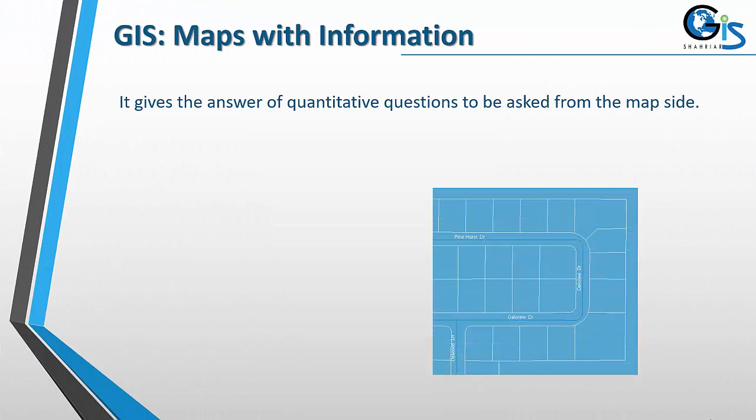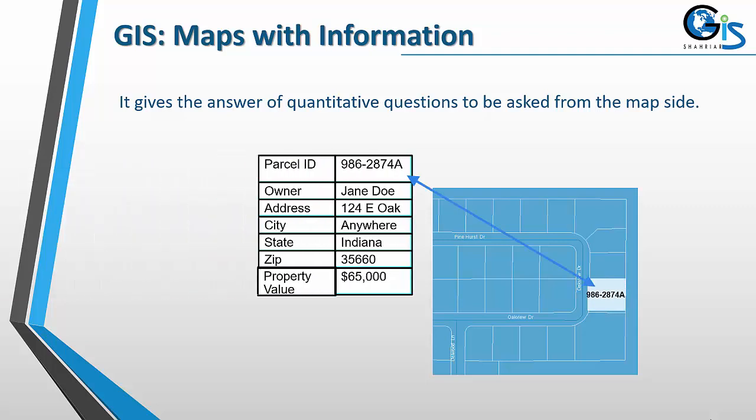It gives answers to quantitative questions asked from the map. By the help of GIS, we can get many answers to quantitative questions — such as the plot number, owner name, address, city, state, zip, and property value. Any type of quantitative question can be answered using GIS, because GIS contains maps with a database. This data provides us information, and from that information we get answers to quantitative questions. Not only that, GIS helps us to join and relate one database with another database.